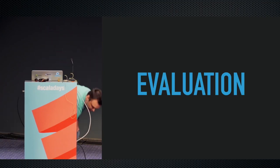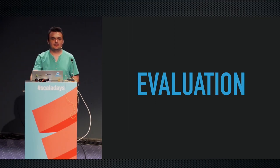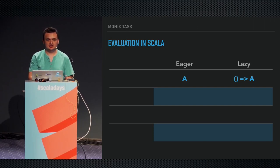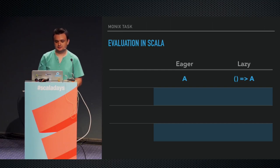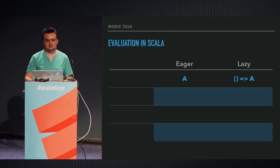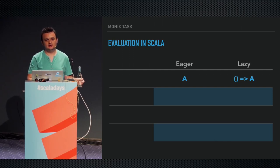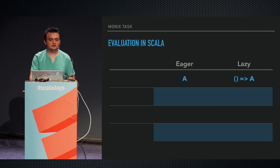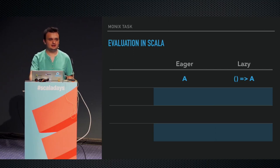Let's talk a little about evaluation in Scala. Scala is an eager language, so expressions are evaluated as soon as the interpreter sees them. To turn them into something lazy — to delay their evaluation — you turn them into a function with zero arguments, also called a thunk. This is actually a really effective way to turn something eager into something lazy.